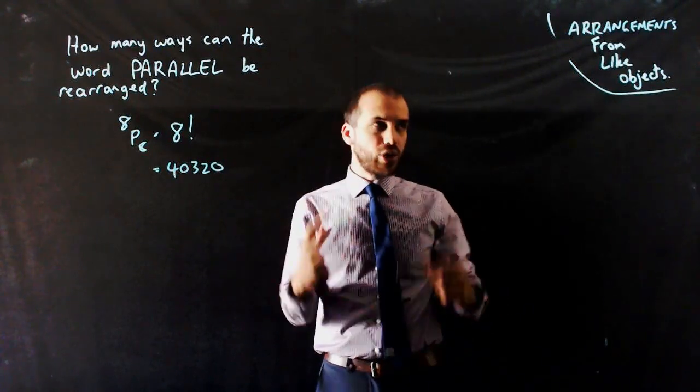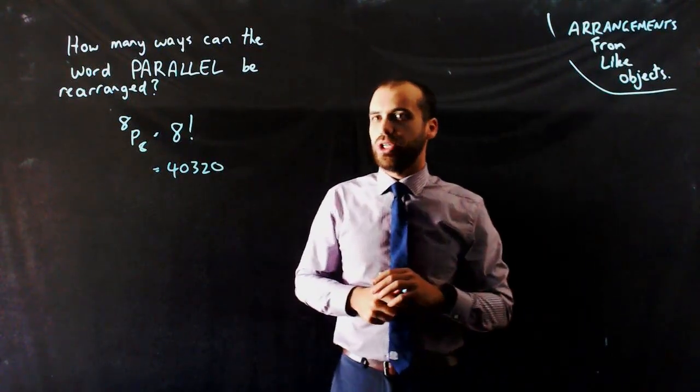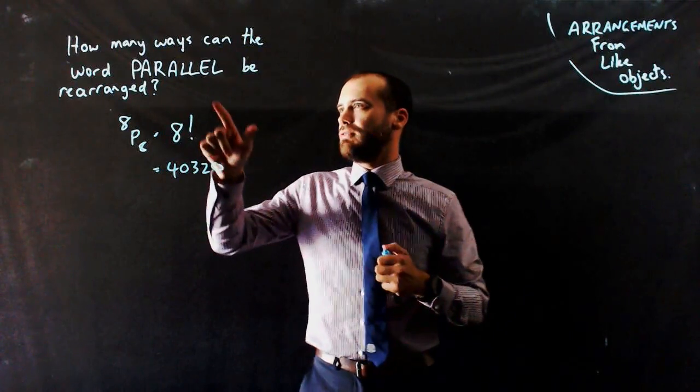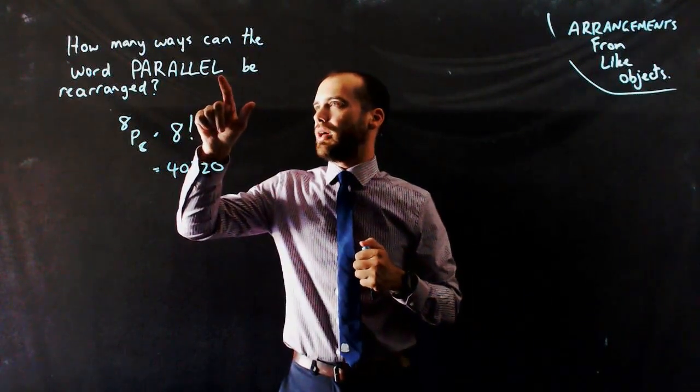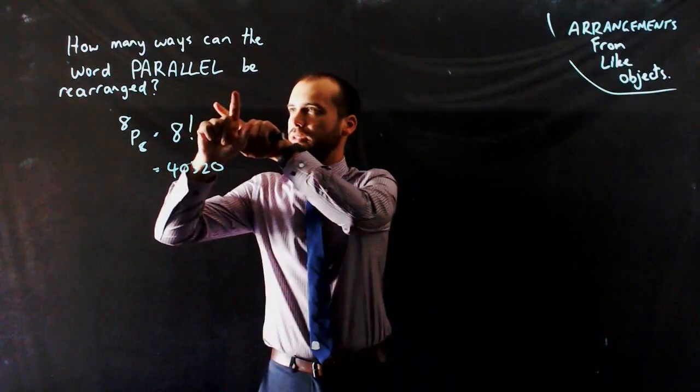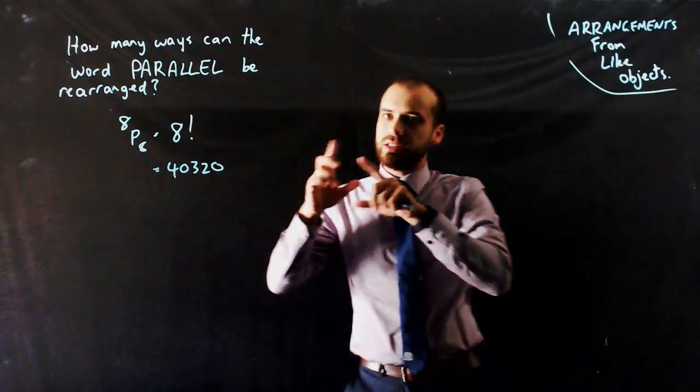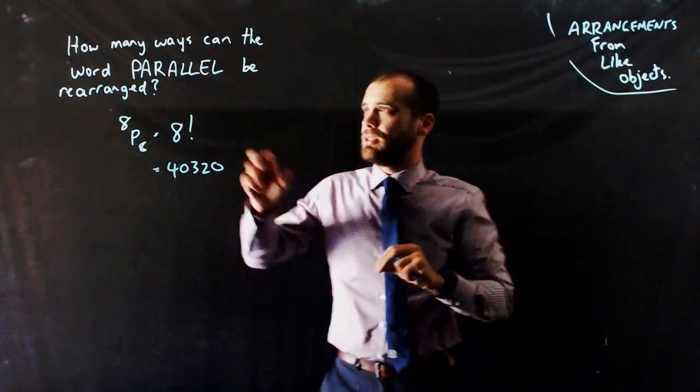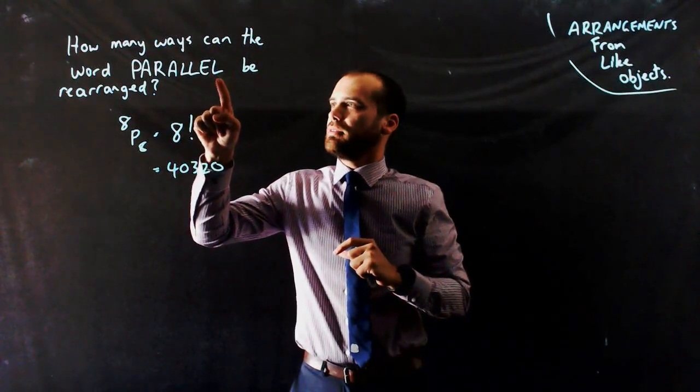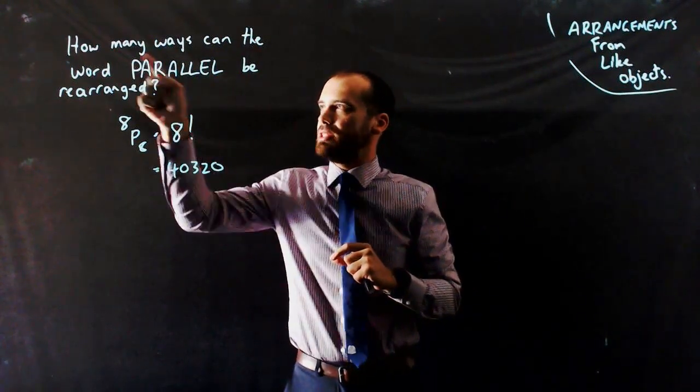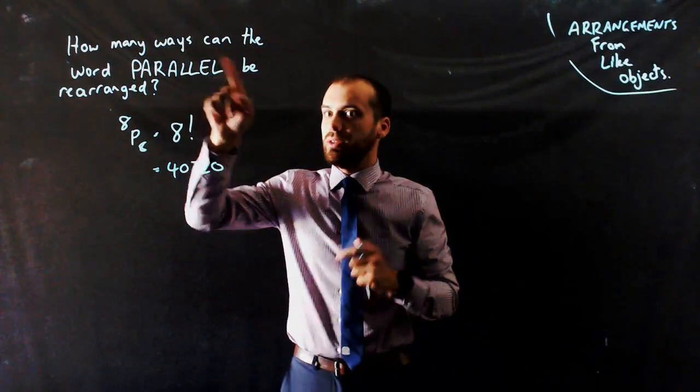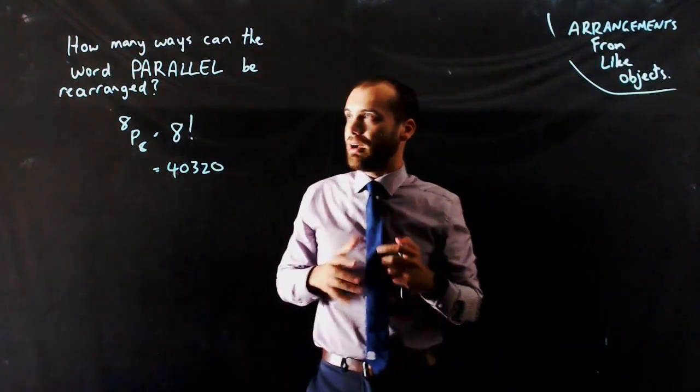But it's more complicated than that because there are some like objects. And for instance, if I swap the L with the P, that's going to look identical to swapping this L with this L, and then swapping this P with that L. That's still going to be Lara-Lep.